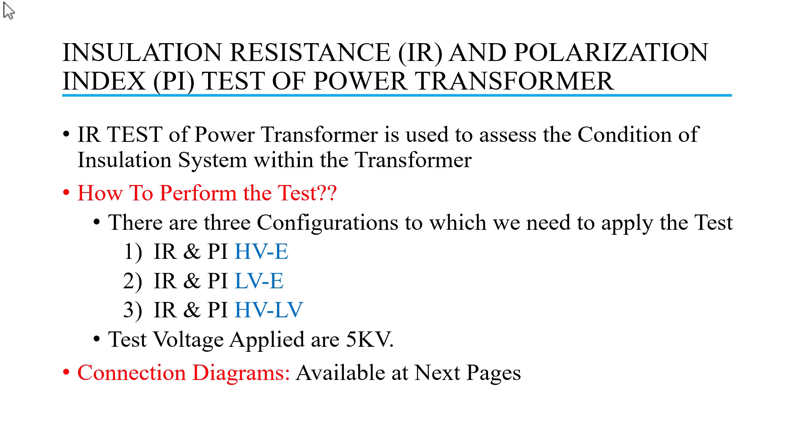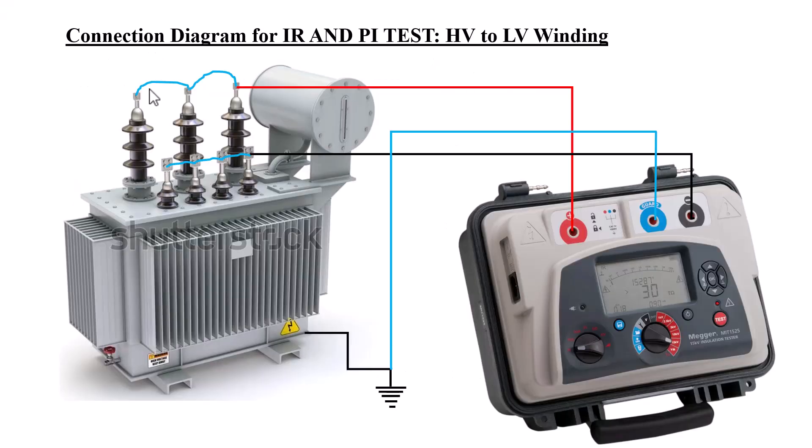In this test, the applied voltage is 5 kV DC. A megger insulation resistance tester is used to perform the test. The connection diagram for all three configurations is shown in the next pages.